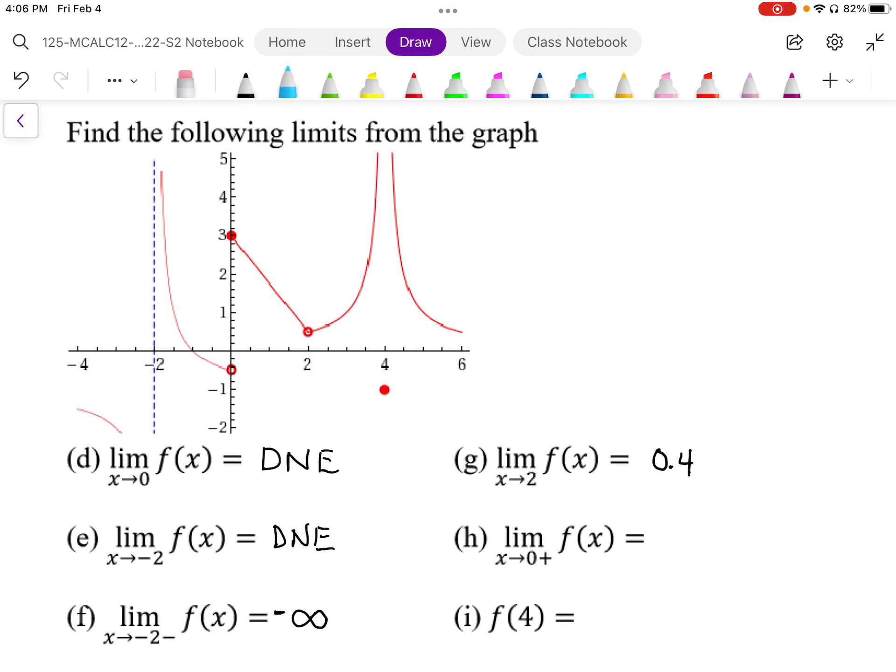For limit as x approaches 0 from the positive side, this is similar to d, except now we're approaching it just from one side, and we can see that the limit is approaching the y value of 3. So as a one-sided limit it exists, it exists and is equal to 3.